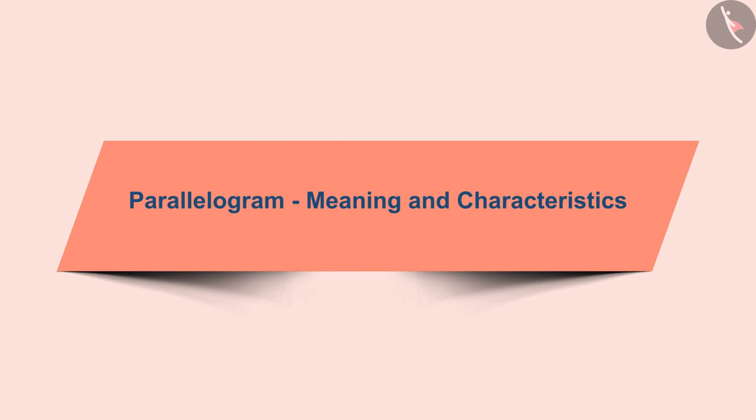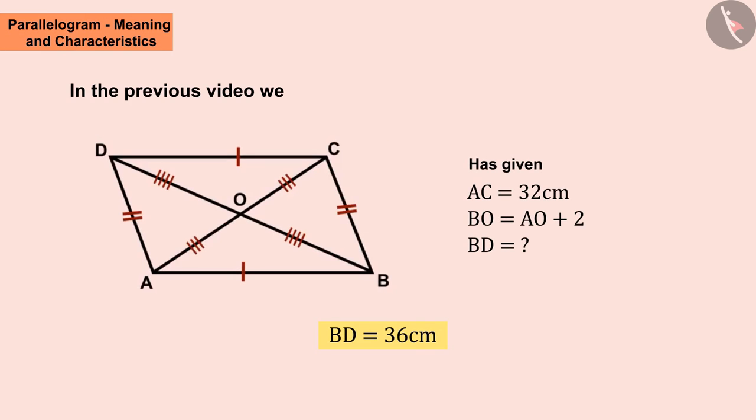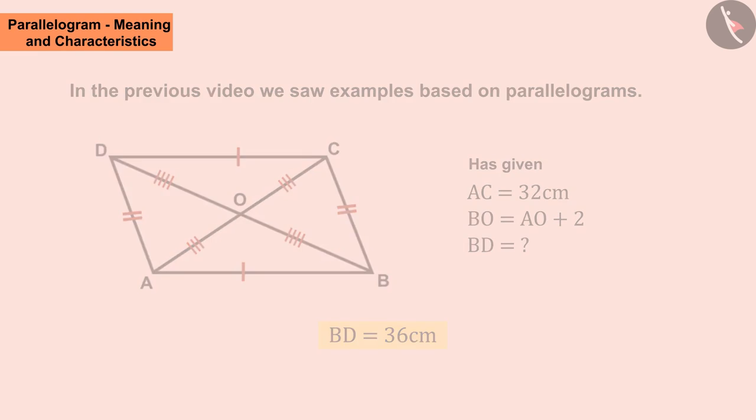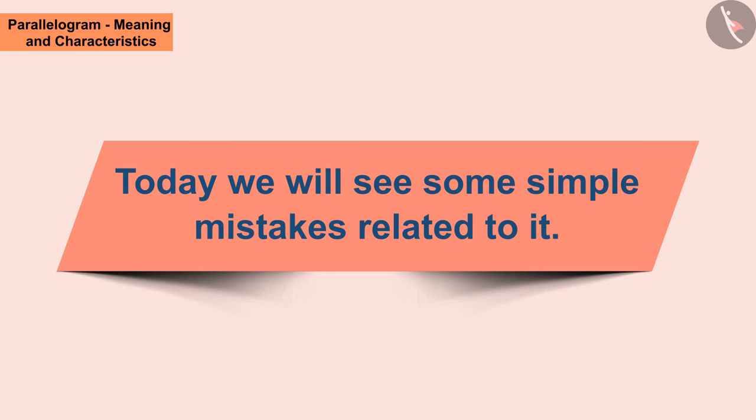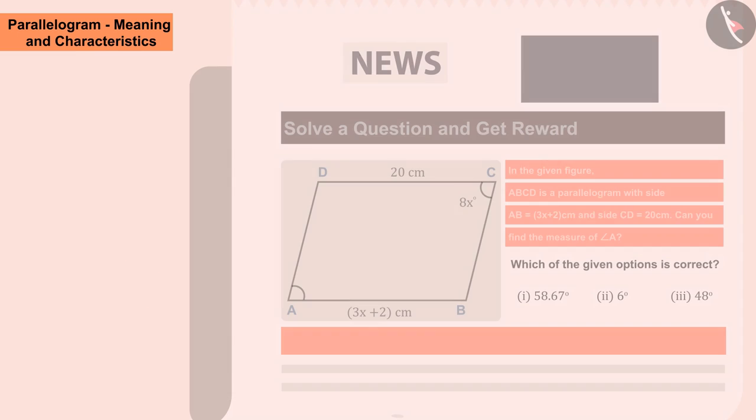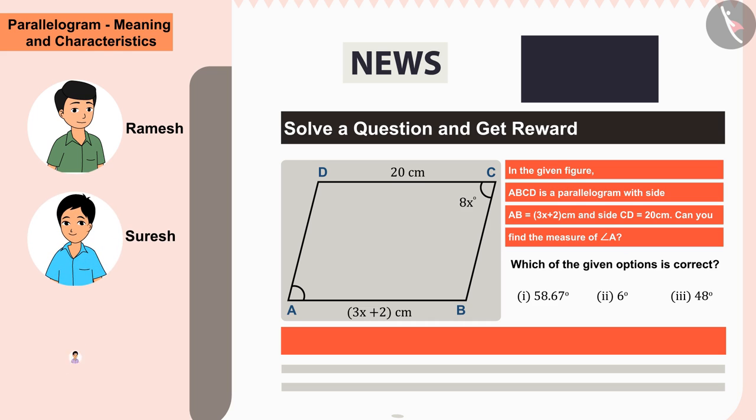Welcome all of you to this video. In the previous video we saw examples based on parallelograms. Today we will see some simple mistakes related to it. Ramesh, Suresh, and Kamlesh see that if they answer one of the questions correctly in the newspaper, they will get a reward. Ramesh, Suresh, and Kamlesh select options 1, 2, and 3 respectively.